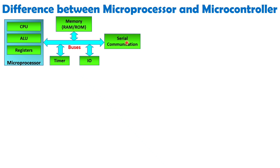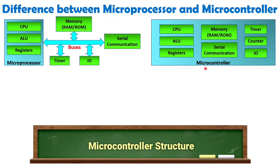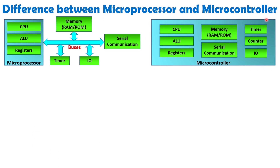Serial communication ports are interfaced externally. IO ports and timers — everything we interface externally with the microprocessor. When we talk about microcontroller, with a single chip we have many things inside: CPU, ALU, registers — same as microprocessor — but in addition, we have memory, serial communication port, timer, counter, and IO port all on a single chip.